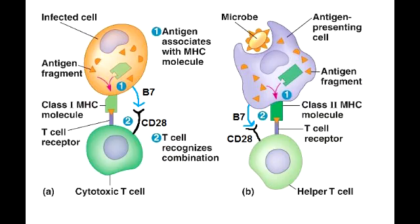Name all the antigen presenting cells. The antigen presenting cells include dendritic cells, macrophages, and B cells. Remember, dendritic cells are the only antigen presenting cells that can activate naive T cells.